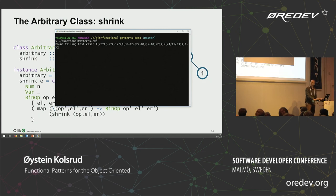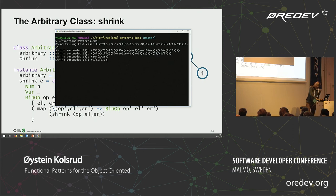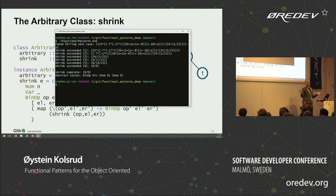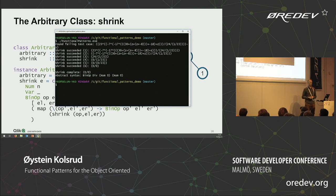Here we have the original failing test case. Then shrinking found a smaller case — it dropped the minus-y at the end. Continuing, it dropped another part. You keep shrinking until you reach a minimum. Now it's pretty clear what went wrong: divide by zero. When we wrote the simplification function, we did not handle the case where we'd reach a division by zero, so an exception is being generated. It's so much easier to debug these minimum cases because all the information in them is relevant.